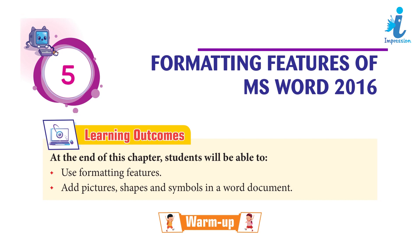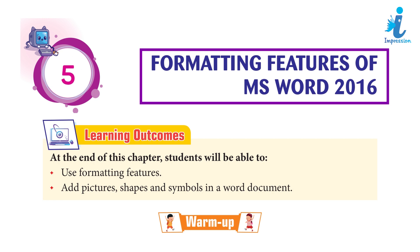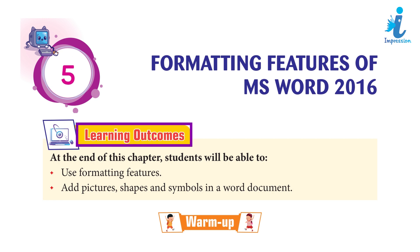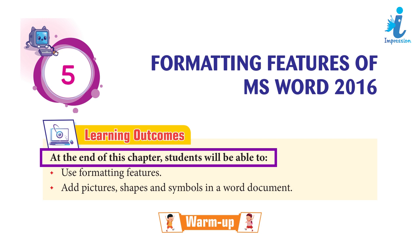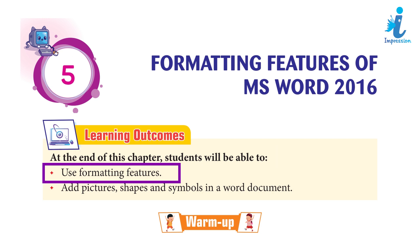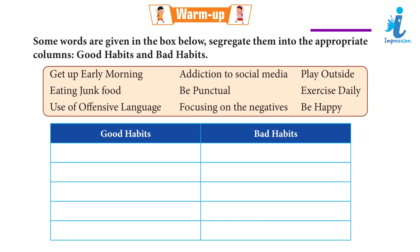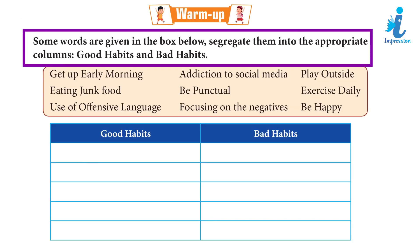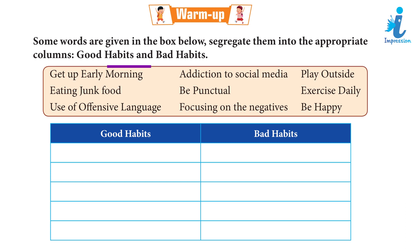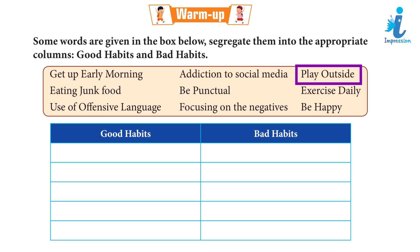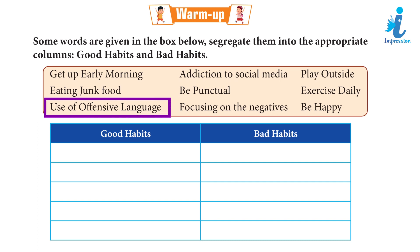Chapter 5: Formatting Features of MS Word 2016. Learning Outcomes: At the end of this chapter, students will be able to use formatting features and add pictures, shapes, and symbols in a Word document. Warm Up: Some words are given in the box below. Segregate them into appropriate columns of good habits and bad habits — Get up early morning, Addiction to social media, Play outside, Eating junk food, Be punctual, Exercise daily, Use of offensive language, Focusing on the negatives, Be happy.